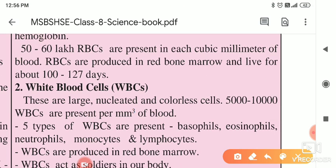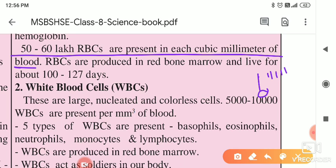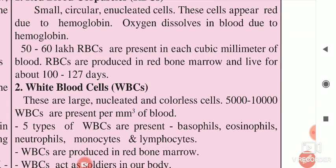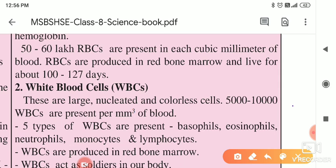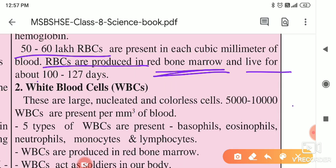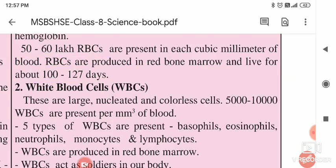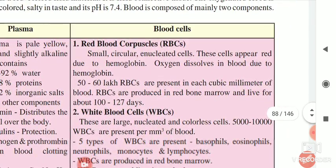50 to 60 lakhs of RBCs are present in each cubic millimetre of blood. One cubic millimetre — on your scale from 0, between two small lines — that much tiny area contains 50 to 60 lakhs of RBCs. You can imagine how small they are. RBCs are produced in red bone marrow, and the lifespan of RBCs is 100 to 120 days.